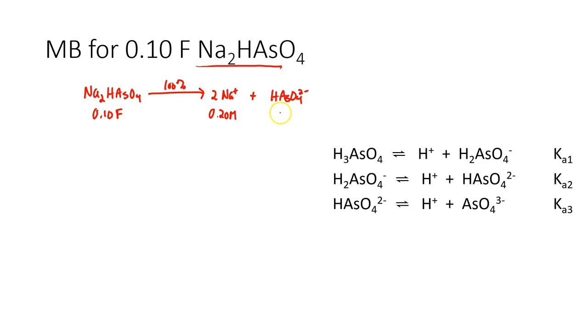So, if the concentration of the salt were 0.1 formal, the concentration of sodium is going to be twice that, or 0.2, and then the concentration of hydrogen arsenate is going to be 0.1. So, the trivial mass balance is this one, that the concentration of sodium is 0.20 molar. Harris calls that the trivial mass balance because you're probably not going to use it in any equilibrium calculations. That's because all group 1A salts are soluble, meaning that sodium is going to be a spectator.